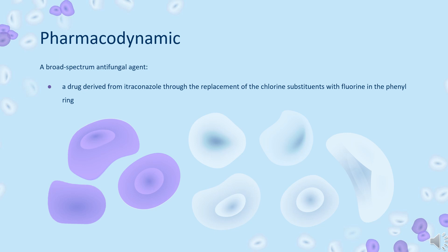Posaconazole is an antifungal agent structurally related to itraconazole. It is derived from itraconazole through the replacement of the chlorine substituents with fluorine in the phenyl ring, as well as hydroxylation of the triazolone side chain. These modifications enhance the potency and spectrum of activity of the drug.